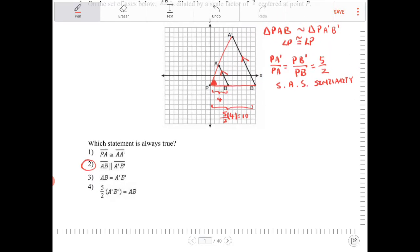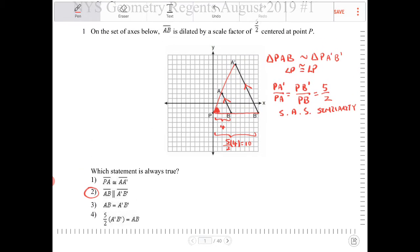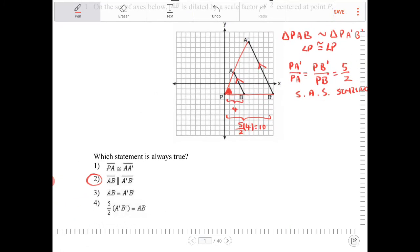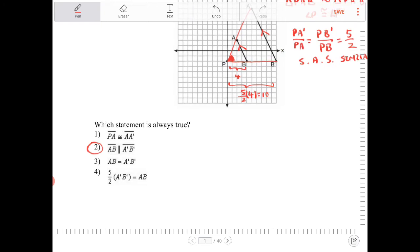PA and AA', they do not have to be congruent. And we know that for a fact because PB and BB', they do not share the same length based on the side-splitter theorem. AB and A'B' are not equal in length because the original line segment just went through a dilation.